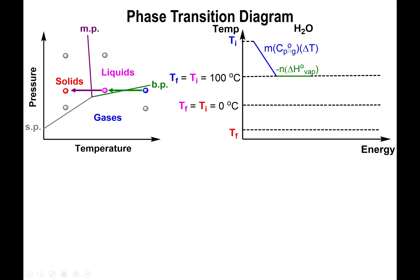Notice that we also multiply by negative one. In the previous example we were going up in temperature, so n × ΔH was positive throughout. But here we're doing the opposite of vaporization — we're condensing. Since ΔH_vaporization involves liquid going to gas and absorbing energy, going from gas to liquid means heat is released, so we place a negative sign in front to account for that.